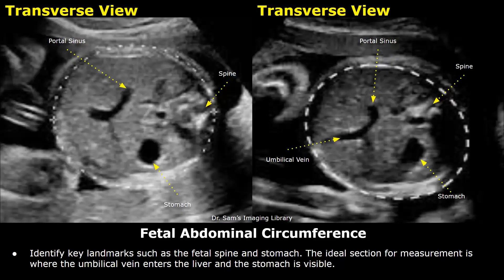This measurement is taken in the second trimester. A transverse view of the fetus is taken at the level of the stomach, the portal sinus, and the umbilical vein.